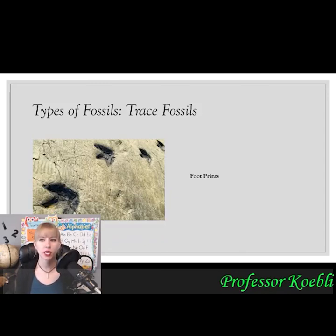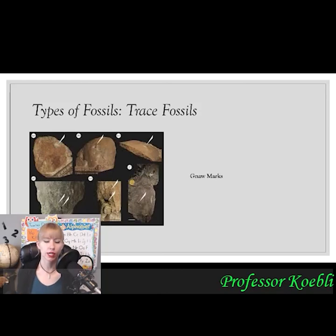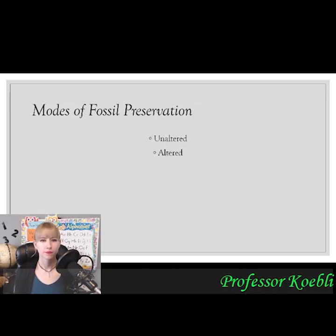Footprints are another trace fossil. They can be preserved if made in very soft sediments that are covered and allowed to dry out, but they're particularly rare because they can be very easily disturbed. Gnaw marks and claw marks are left behind on the bones of different organisms and can be connected to specific predators — for example, velociraptors, pterodactyls, mosasaurs, or T-rexes — based on the size of the teeth or claw marks. You can also tell if a predator was more of a scavenger and how different predators would eat when killing something.